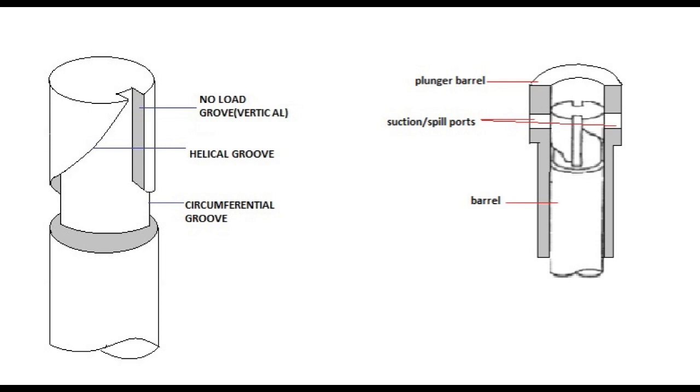Otherwise it will lead to loss of power and damage to internal components of the engine. The most popular method of controlling the quantity of fuel delivered to the injectors is by using a reciprocating plunger which has a helical groove machined into it.